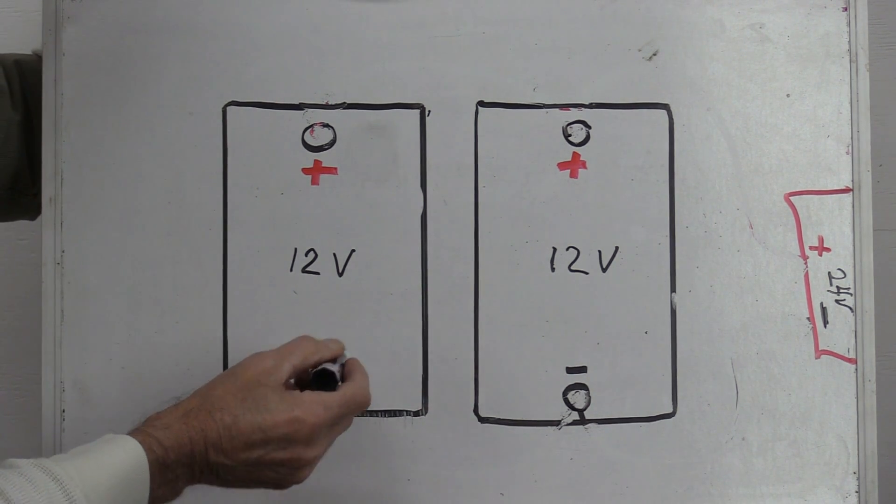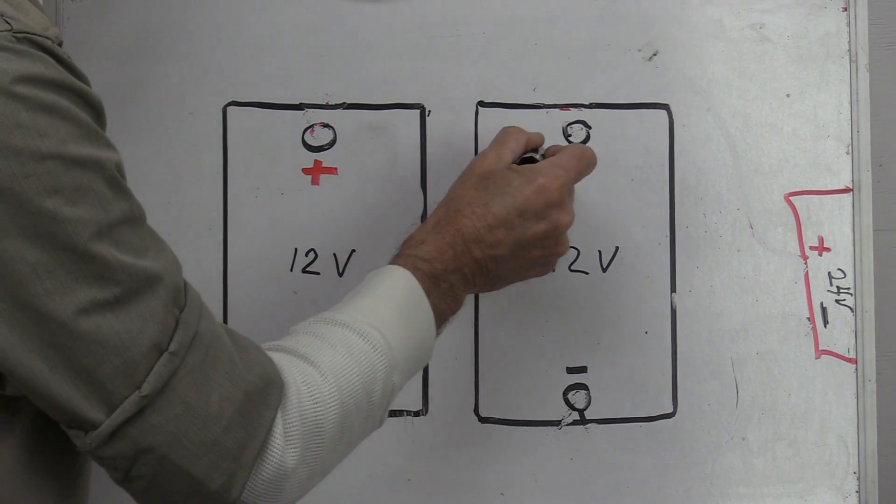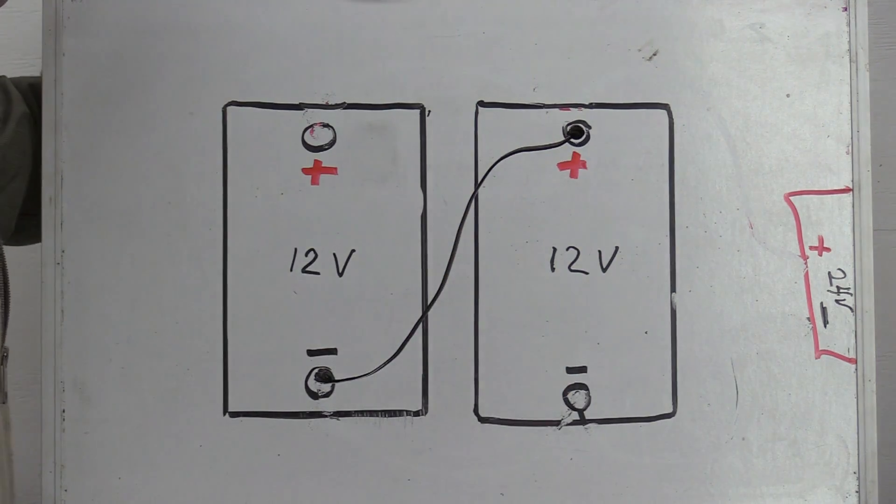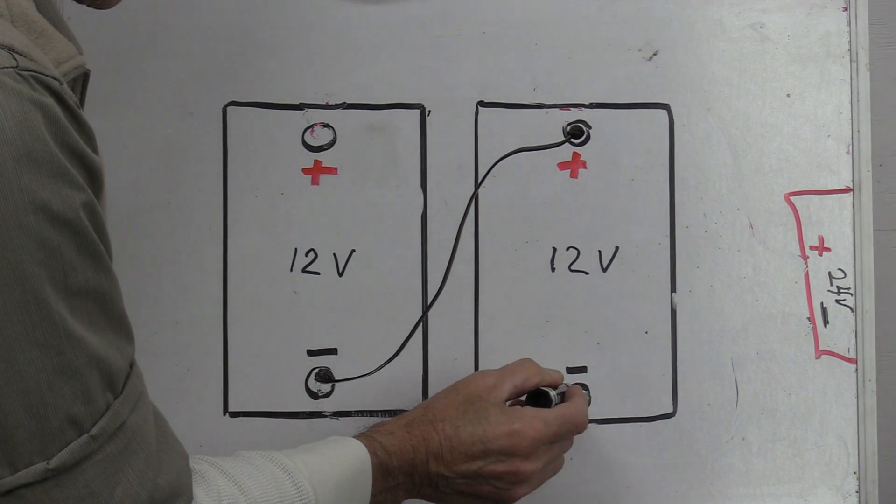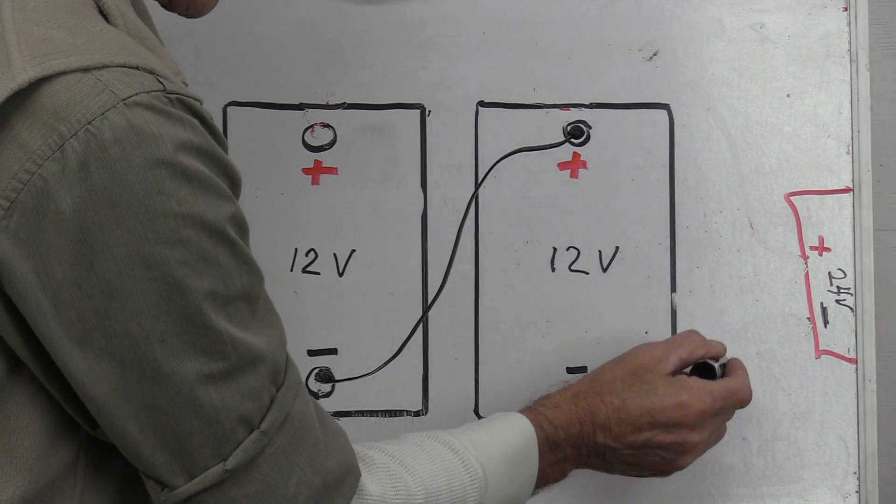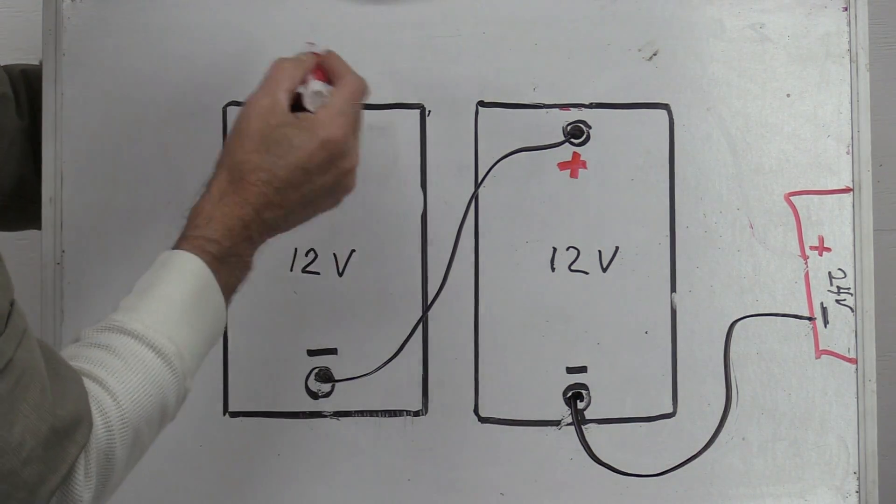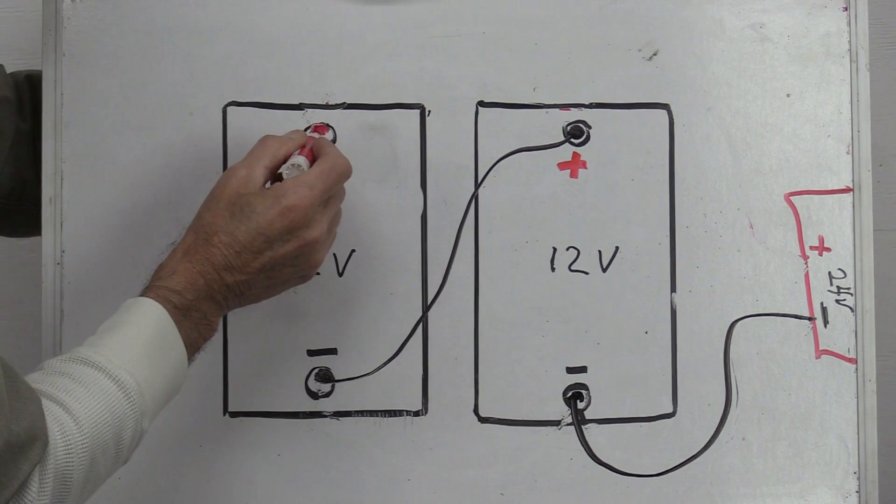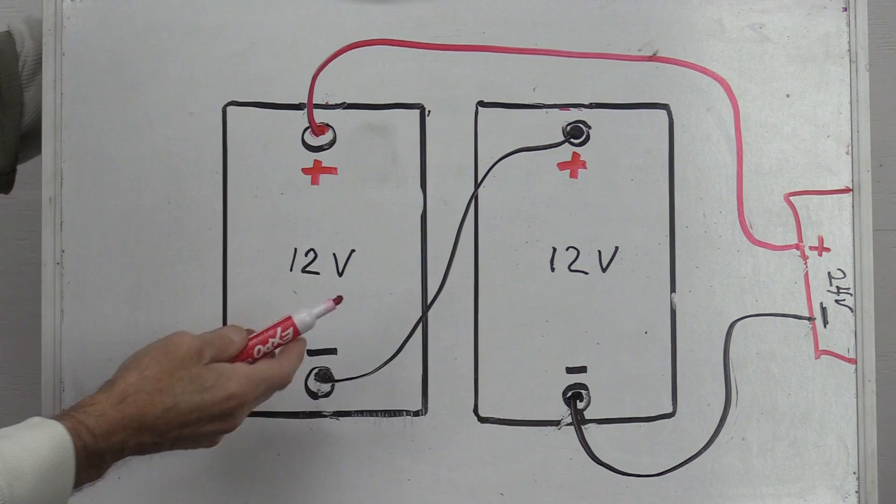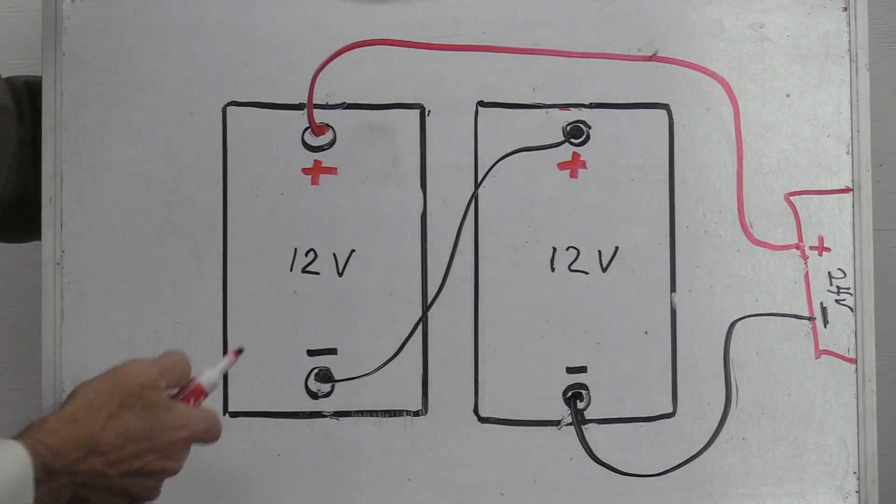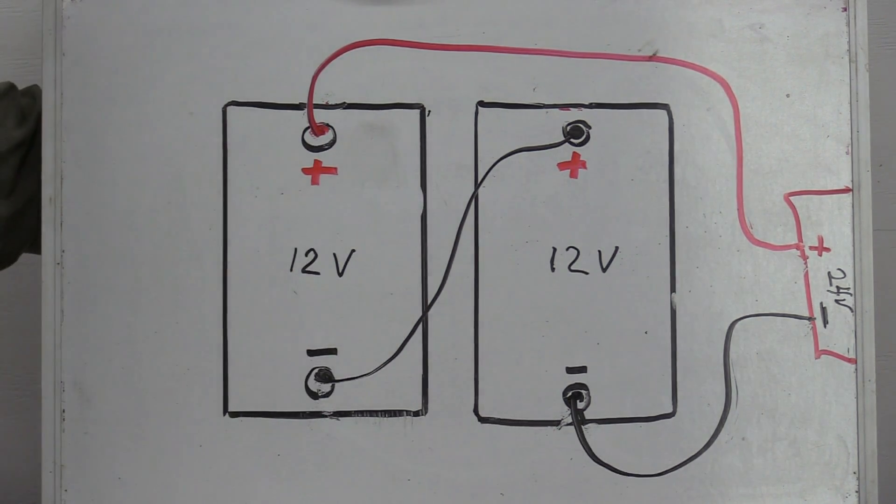Just take the negative post of this battery, run a battery cable over to the positive post. Now then, take your battery cable from the negative of this post, go to the back of the inverter and come off this end with a positive cable to the back of your inverter. Now you have a 24 volt battery. This is called series wiring.